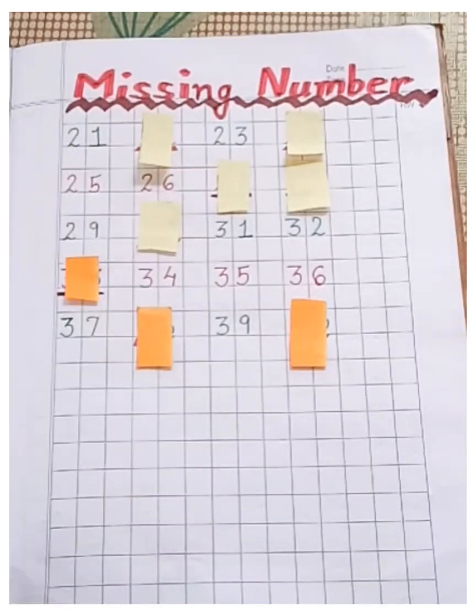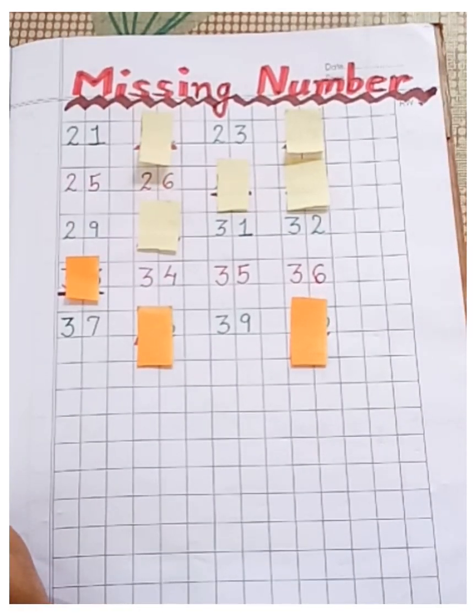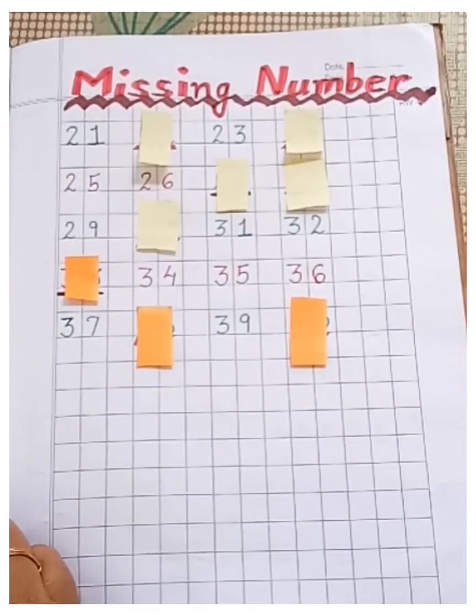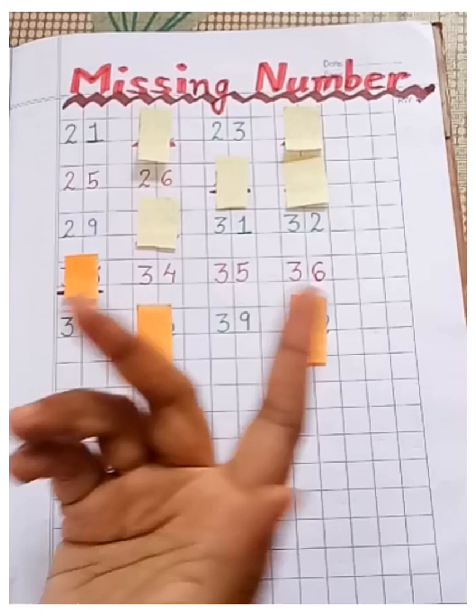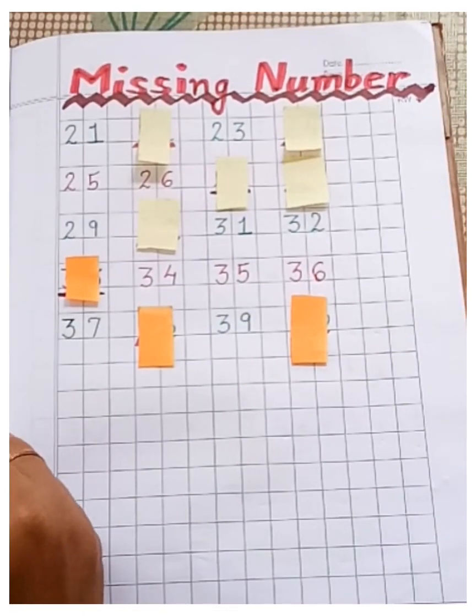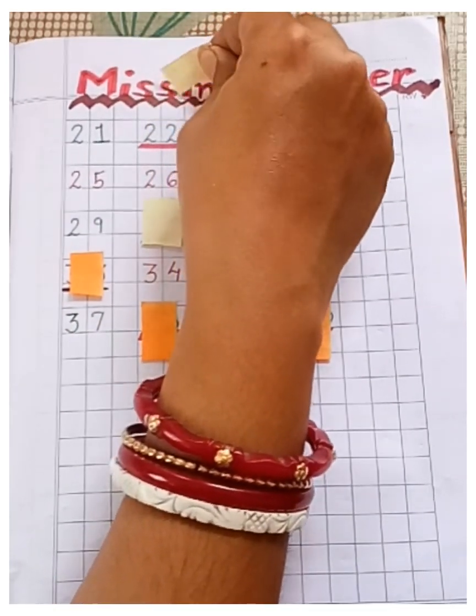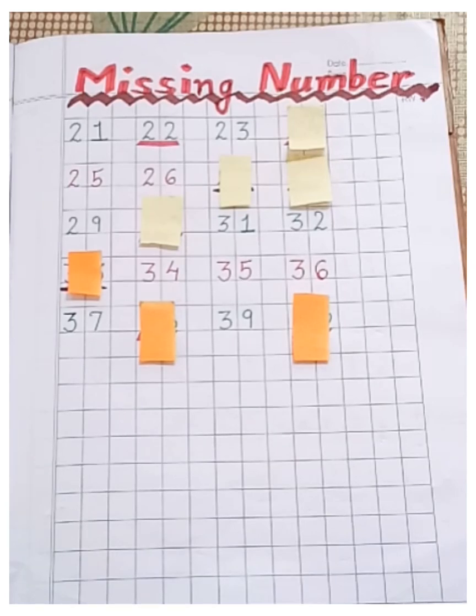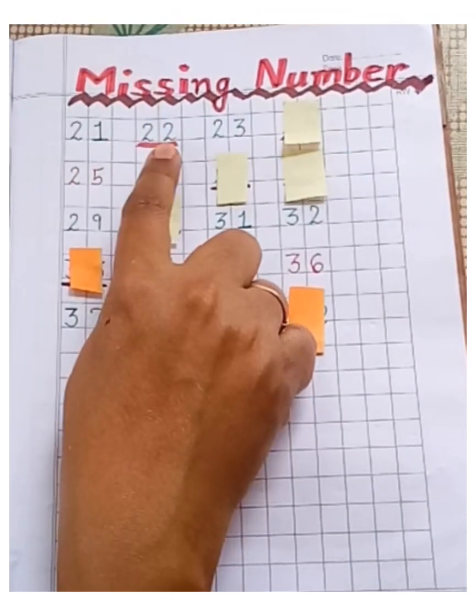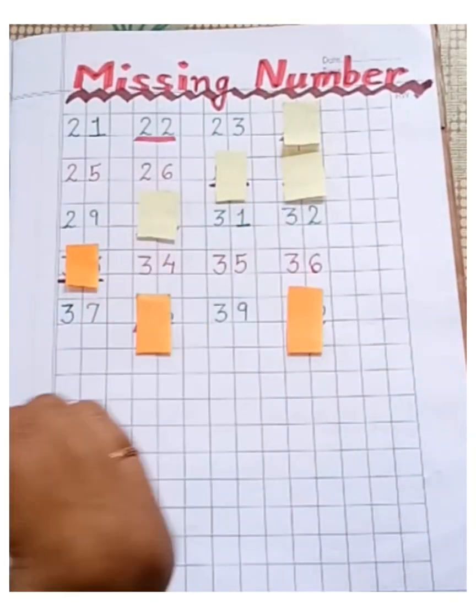The first number is 21, and the next number is missing. Missing means no number. So let's find out. 22. So we have found out the next number. Very good.